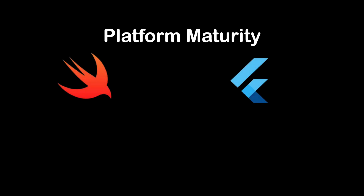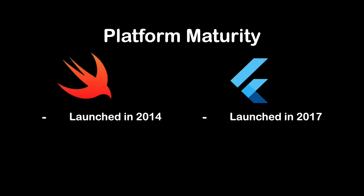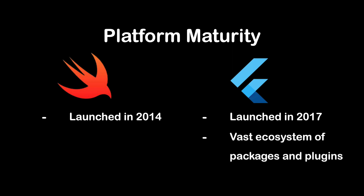The third parameter is platform maturity. Flutter was first launched in May 2017, whereas Swift came into picture in June 2014, so Flutter is a relatively newer platform but is growing at a tremendous pace in both popularity and maturity. Flutter also has a vast ecosystem of third-party packages and plugins. Swift, being a more mature framework, has a well-established ecosystem providing features such as type inference and high performance optimization, along with a large ecosystem of libraries, frameworks, and tools which can help developers extend the functionality of their apps.